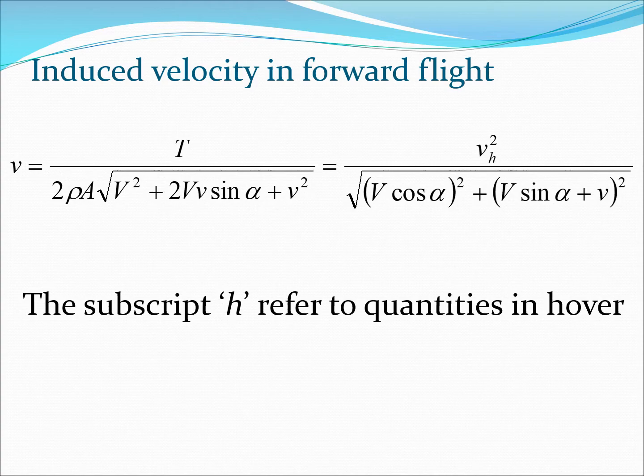Immediately we can rewrite this equation in this form here. You can see here that T by 2 rho A is the same as vh squared, where we are using the subscript h to refer to hover quantities. The induced velocity expression in the hover situation, vh, is square root of T by 2 rho A. I can write this expression in the denominator in terms of two squares. If you square these out, you get a V squared term. Remember, sine square alpha plus cos square alpha equals 1. You get the term 2Vv sine alpha, and then a small v squared term.